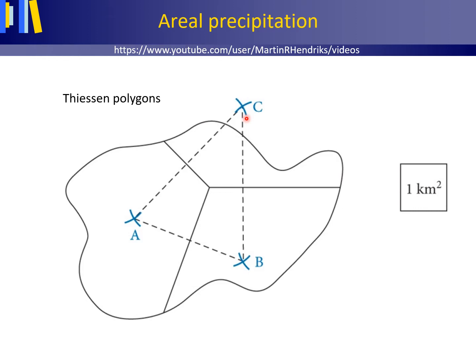Thiessen polygons are built up by drawing midlines, perpendicular bisectors, between the rain gauges on a map. Perpendicular bisectors of any three rain gauges meet in one point. To each area that surrounds a rain gauge, the value of the precipitation depth measured in that rain gauge is assigned.